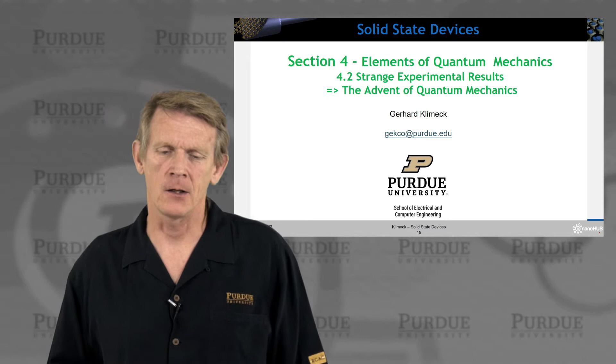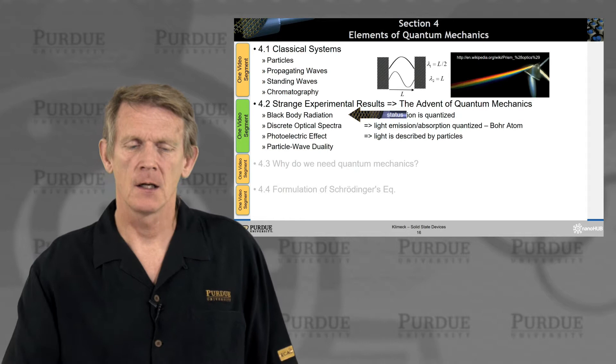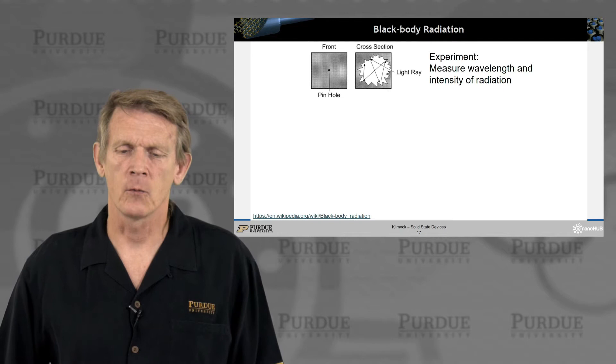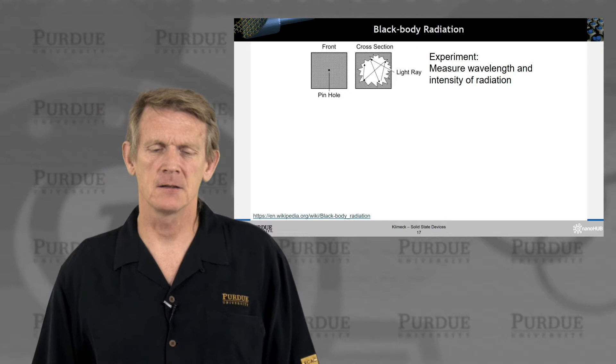So we'll talk first about black body radiation. And that's a very old experiment. People created spectrometers where they looked at the wavelength and intensity of radiation coming out of objects.